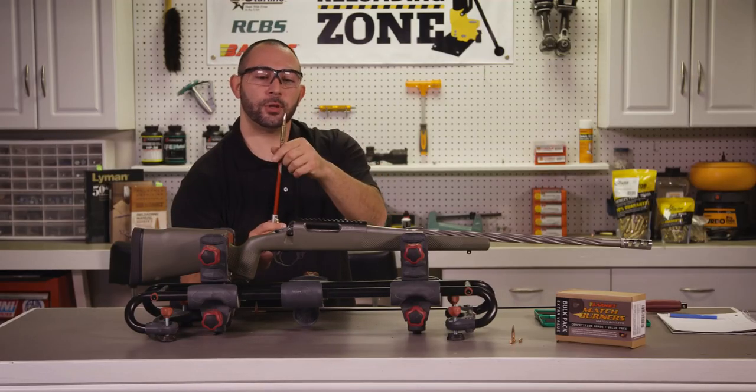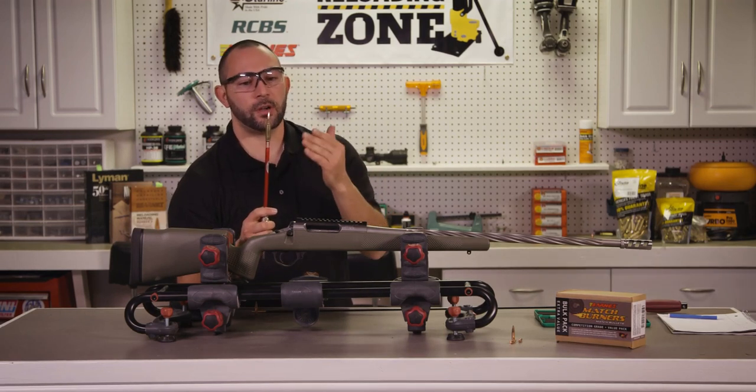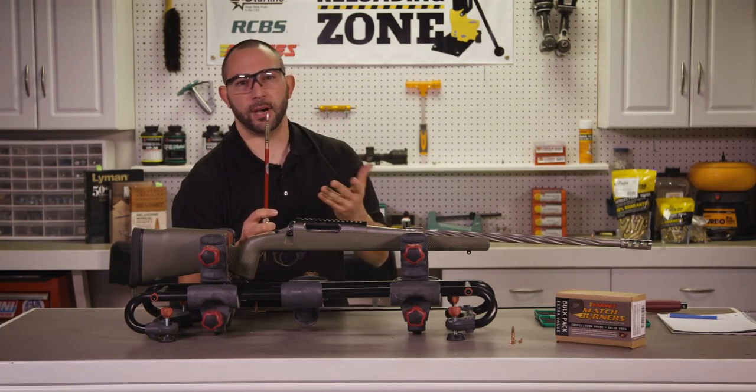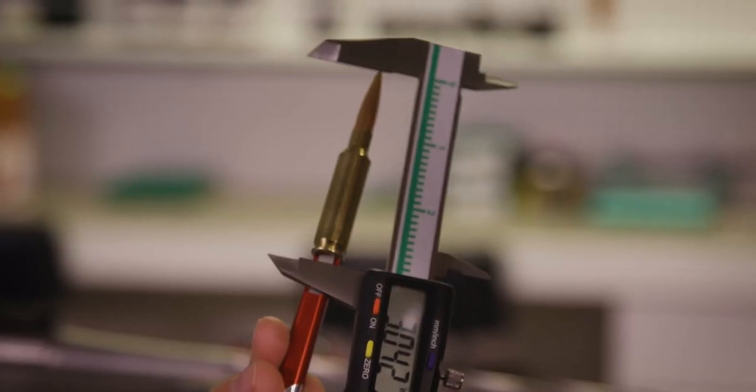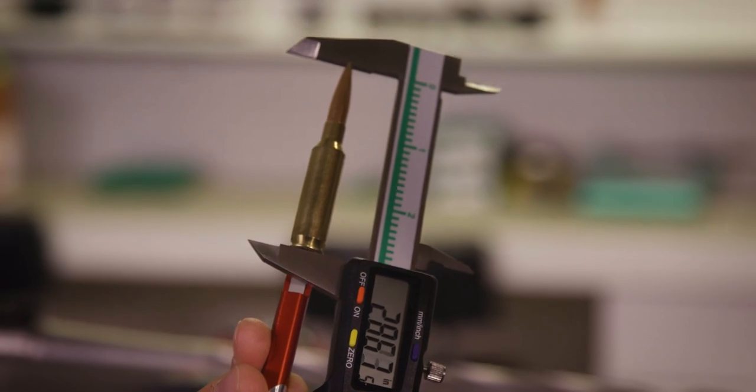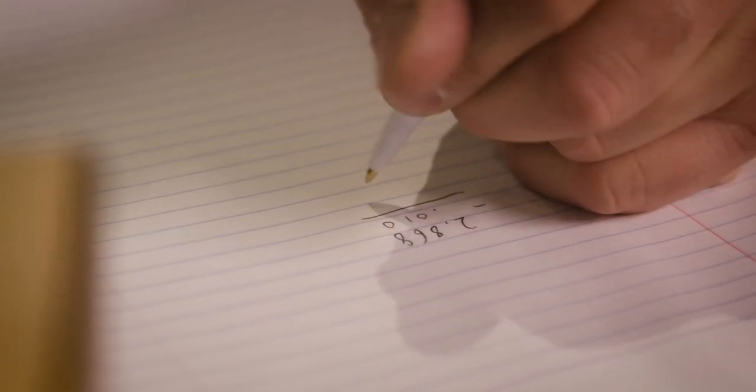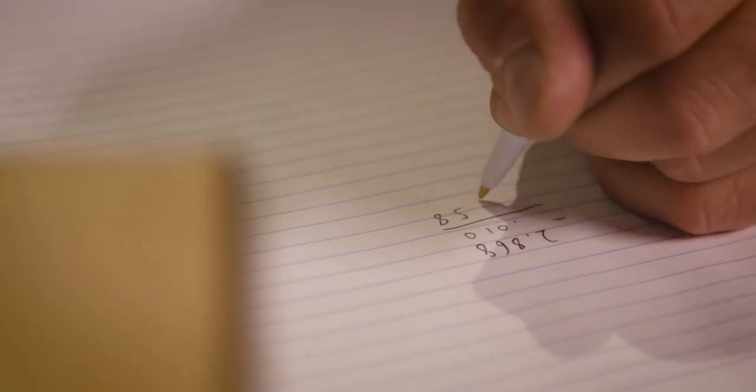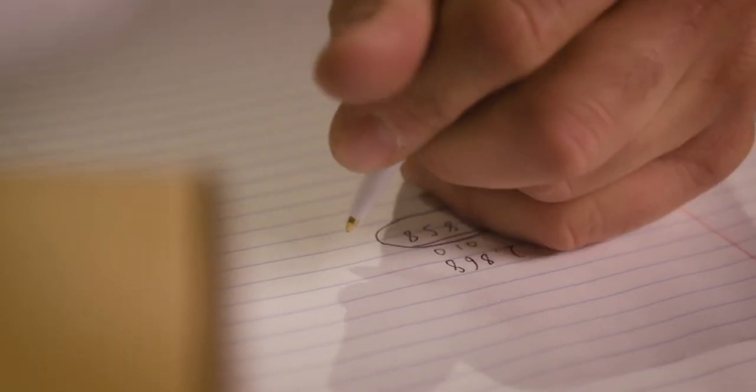Sometimes a round that's jammed all the way into the lands just simply won't chamber. So for that reason, you want to reduce this measurement by about 10 thousandths. There's a special cut in the tool that allows you to get your calipers on and measure that overall length. Once we measure that, we want to write this number down. Once we have this number, we want to set up our seating die to create rounds at this overall length.